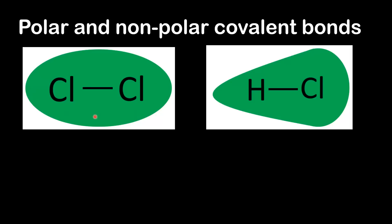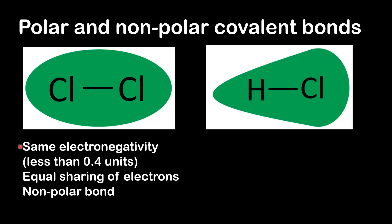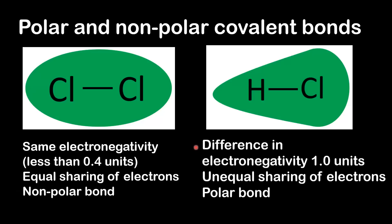On the left, the electrons are distributed equally between the two chlorine atoms, therefore they are being shared equally. On the right, the electrons are mainly distributed around the chlorine atom, showing the electrons are not being equally shared. On the left we have two atoms of chlorine — they have the same electronegativity, so we have equal sharing of electrons and a nonpolar bond. On the right we have a difference in electronegativity between hydrogen and chlorine of 1.0 units, giving unequal sharing of electrons and therefore a polar bond.